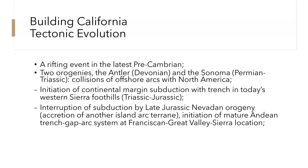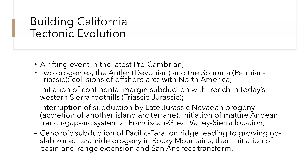Basically what we see is subduction in the late Jurassic that creates the orogeny in Nevada. We also see the initiation of a trench-arc system known as the Franciscan Great Valley Sierra location, which is a bunch of metamorphic rocks created from material scraped during subduction. We have Cenozoic subduction of the Pacific-Farallon Ridge leading to a growing non-slab zone, the Laramide Orogeny in the Rocky Mountains, then initiation of Basin and Range extension and the San Andreas transform. The Pacific-Farallon Ridge is what really created the rifting in the Basin and Range.